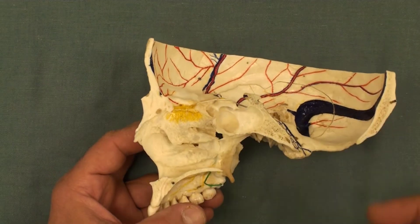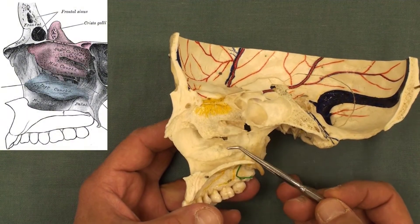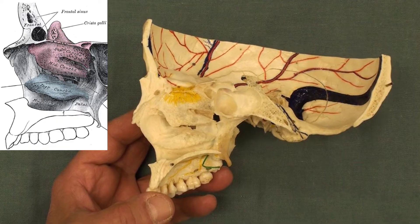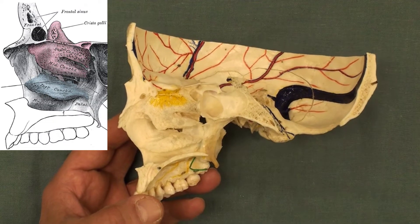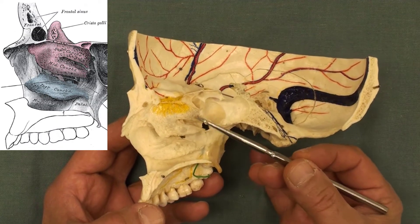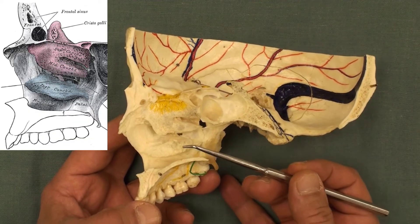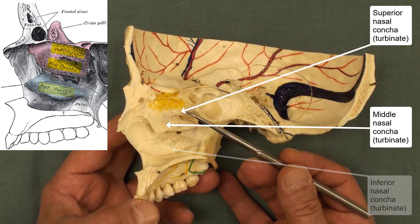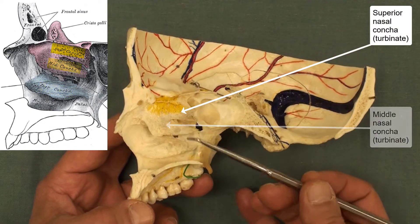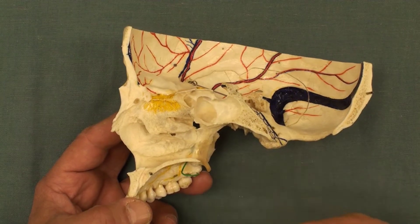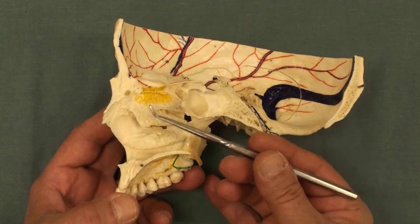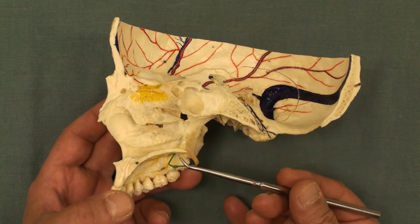The medial wall is mostly made by the vomer and the perpendicular plate of the ethmoid bone, so the medial wall is smooth. However, on the lateral wall, as you can see, we have some bony shelves. These bony shelves are referred to as conchae. We have three conchae on the lateral wall of the nasal cavity: the inferior, middle, and superior. These conchae increase the surface area of contact with the air — that's their main function.